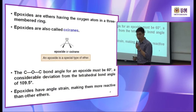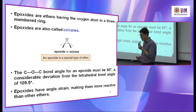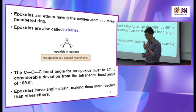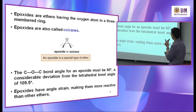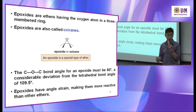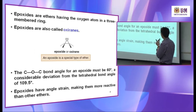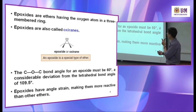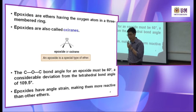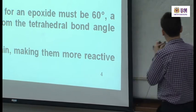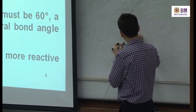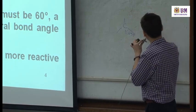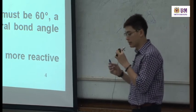Epoxide, as mentioned, is also an ether, having the oxygen atom in a three-membered ring — we count: one, two, three. The C-O-C bond angle for an epoxide must be 60 degrees. This is a considerable deviation from the tetrahedral bond angle of 109.5 degrees — the epoxide is 60 degrees versus 109.5.